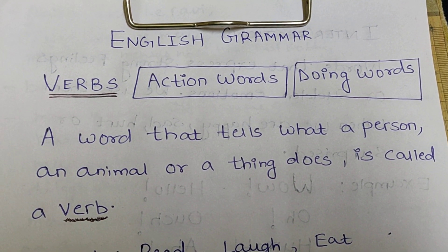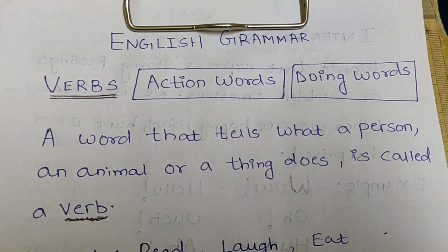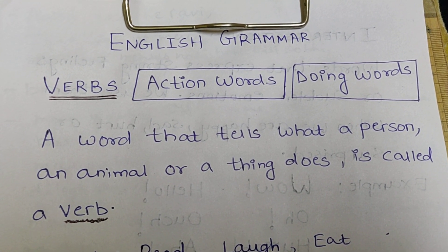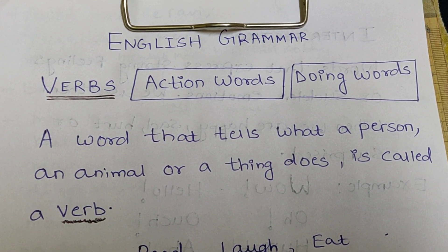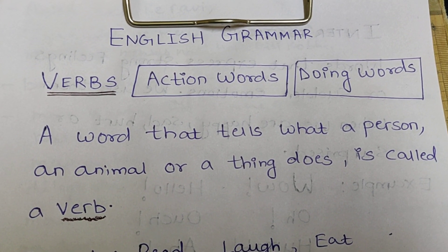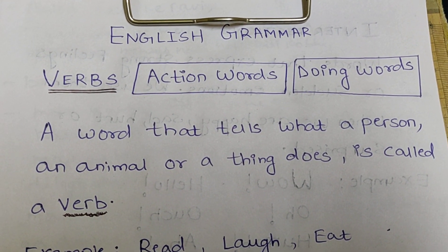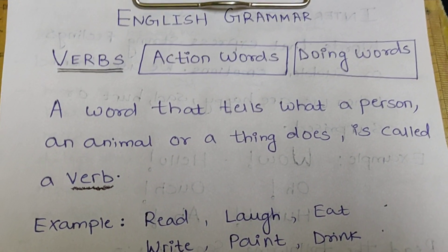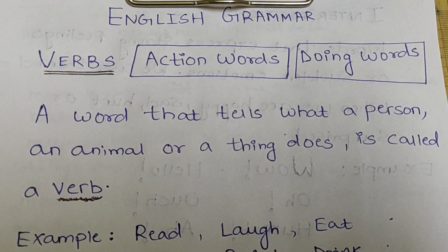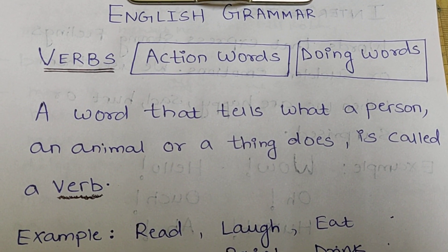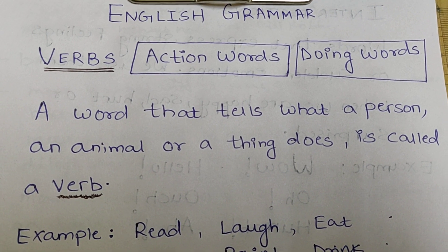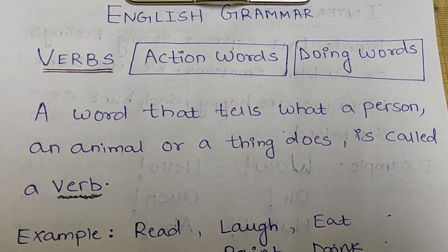In the previous class, you have studied action words and doing words. Now we will call action words and doing words as verbs. Let's read out the definition: a word that tells what a person, an animal, or a thing does is called a verb.